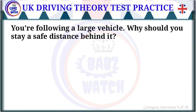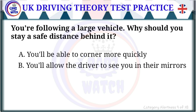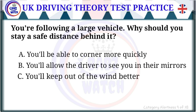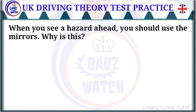Question 9 of 28: You're following a large vehicle. Why should you stay a safe distance behind it? The correct answer is: you'll allow the driver to see you in their mirrors. Maintaining a safe following distance ensures the large vehicle's driver can see you, improving safety for both parties.